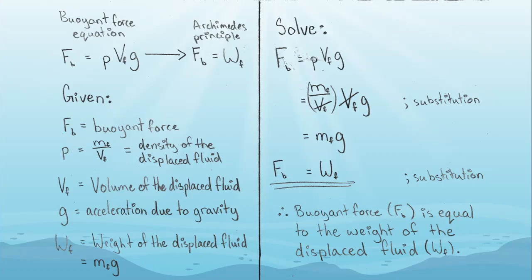To elaborate on the previous slide, I'm going to show you how to go from the buoyant force formula to the Archimedes Principle. On the left-hand side, we have our givens: F of b, which is the buoyant force; p, which is the density of the displaced fluid, also equal to m of f (mass of the fluid) over V of f (volume of the fluid); then V of f, the volume of the displaced fluid; g, acceleration due to gravity; and W of f, the weight of the displaced fluid, which is also equal to the mass of the fluid times acceleration due to gravity.